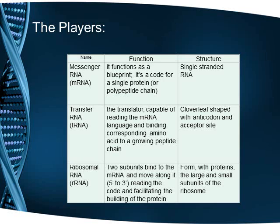The last RNA type is ribosomal RNA. The ribosome, as you'll remember from unit one, is one of the few organelles not membrane-bound — it is made from ribosomal RNA and proteins. There are two subunits to a ribosome, kind of like a large hamburger bun and a small hamburger bun. The two subunits wrap themselves around the mRNA and facilitate the hydrogen bonding with the transfer RNA and the building of the protein polymer.